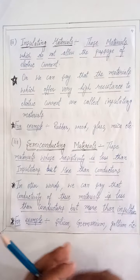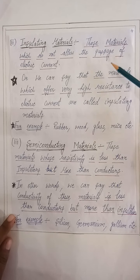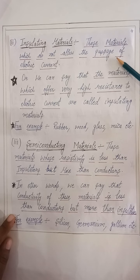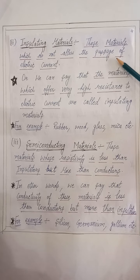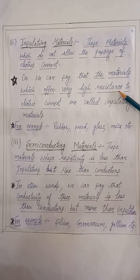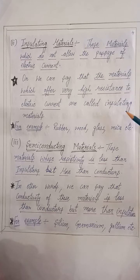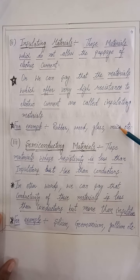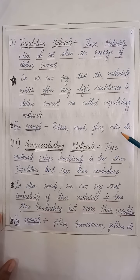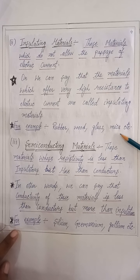Now, the insulating material. Those materials which do not allow the passage of electric current, or which offer a very high resistance to the electric current, are called insulating materials. For example, rubber, wood, glass, mica, etc.